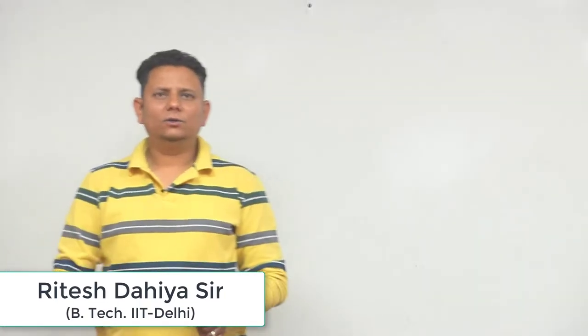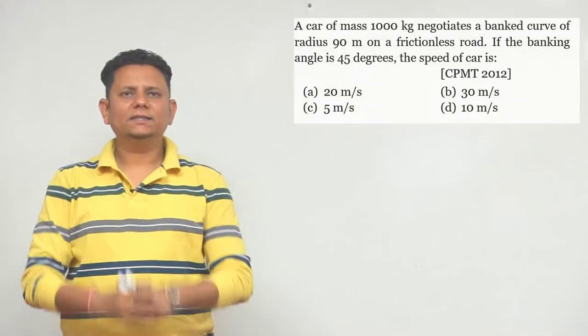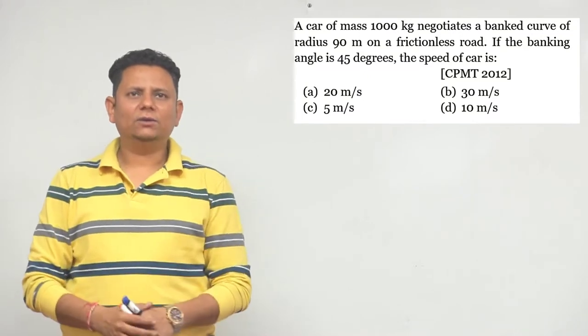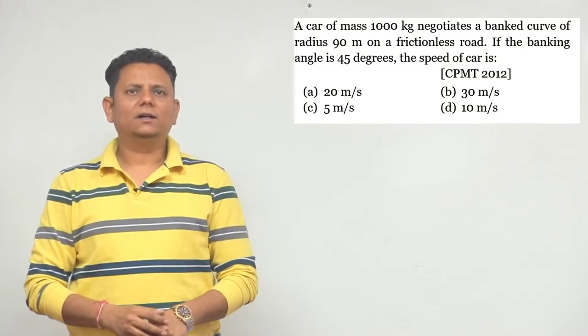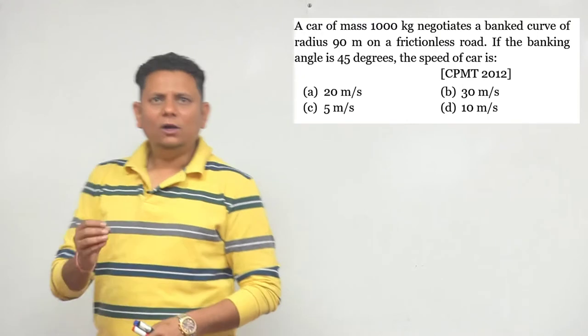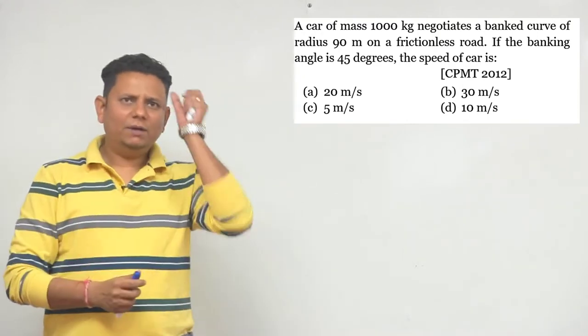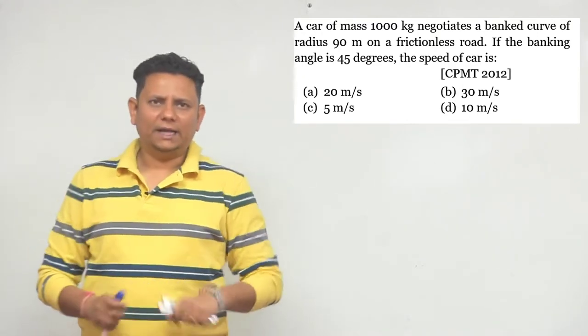Next question, 2012 ka NEAT ka sawal hai. It says, a car of mass 1000 kg negotiates a bank curve of radius 90 meter on a frictionless road. If the banking angle is 45 degrees, speed of car bata hai.